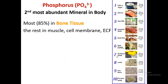Phosphorus is the second most abundant mineral in the body — 85% is found in the bones, bound with calcium in calcium hydroxyapatite. The rest is in muscles and cells, especially the extracellular portion. Phosphorus is also found in DNA and RNA — it is actually the only mineral found in both DNA and RNA — making it very important in metabolism.